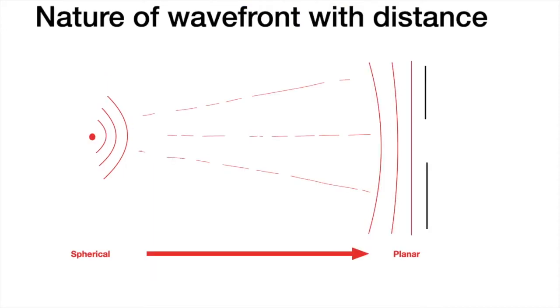So this is one way to generate a planar wavefront—that a point source is kept at a very large distance—or another one is to have a source which has directly a planar wavefront, like lasers. Now let us look at diffraction in more detail.